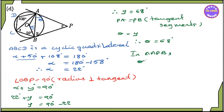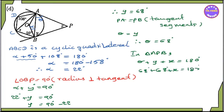DA is y, x, 180 degrees. DA is 60A, y is 60A, plus x, equal to 180 degrees.